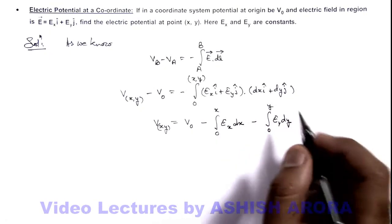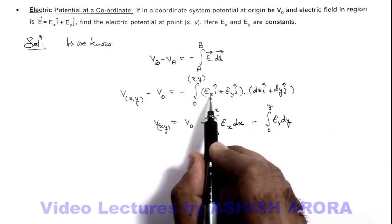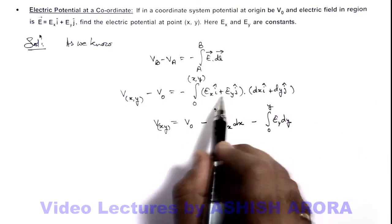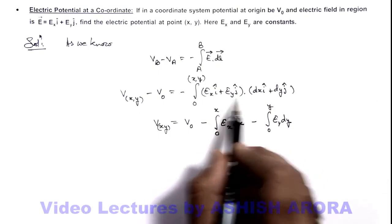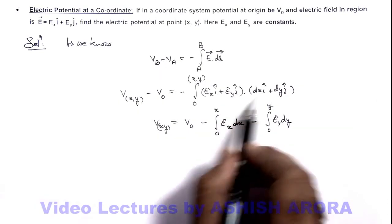Here I am not going for electric field in x direction with dy because the dot product will be zero, same as for Ey and dx dot product will be zero because they are perpendicular.